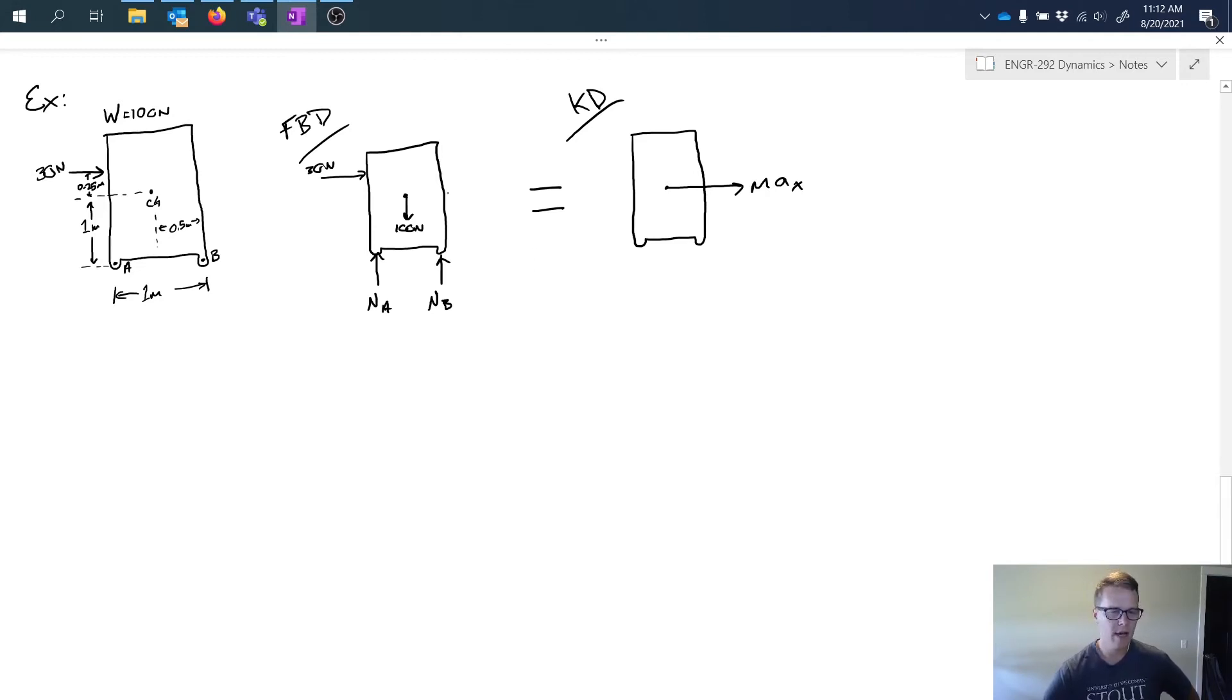So I've got my free body diagram equal to my kinematic diagram. If I look at my situation, this going, this is steps one through three, basically, of what I previously described in a general solution procedure.